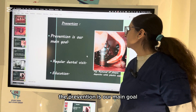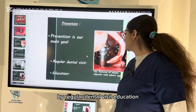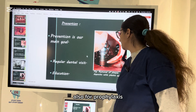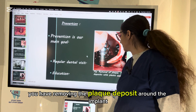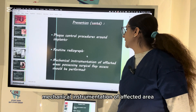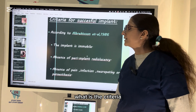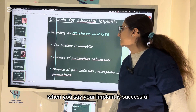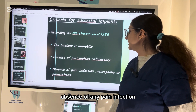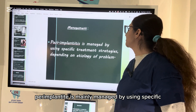Prevention is the main goal — to prevent peri-implantitis from occurring through regular dental visits, patient education on proper implant cleaning, and professional access to remove plaque deposits with a plastic scaler, routine radiographs, mechanical instrumentation, and surgical flap access when needed. Criteria for a successful implant include: implant is completely immobile, absence of peri-implant radiolucency, absence of pain, infection, neuropathy, or paresthesia.